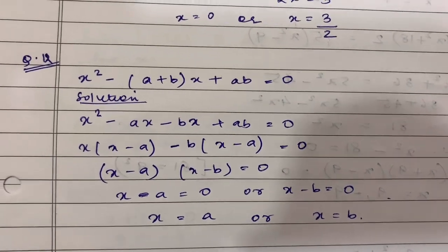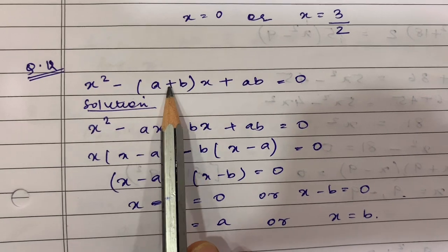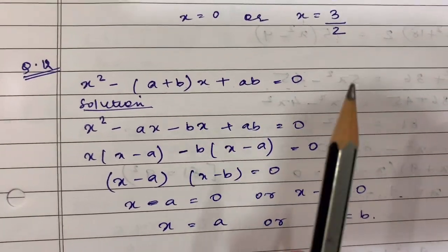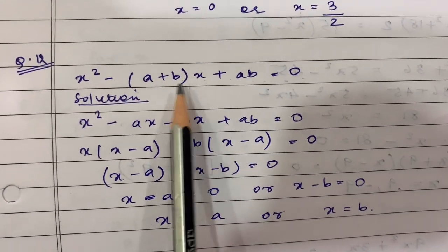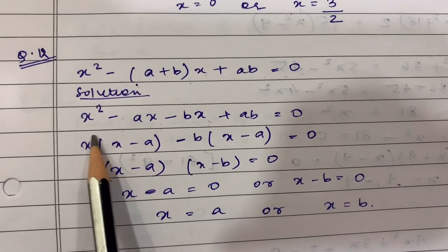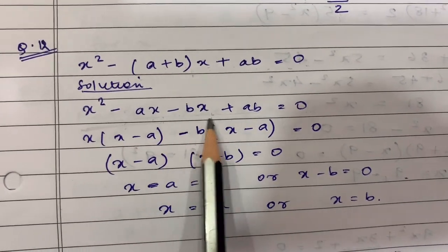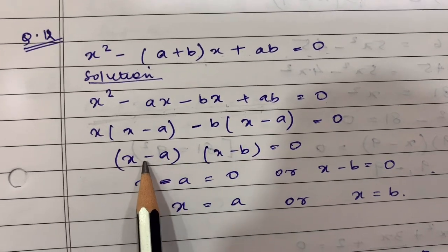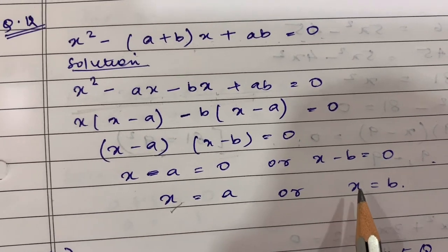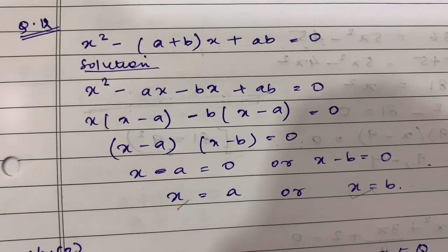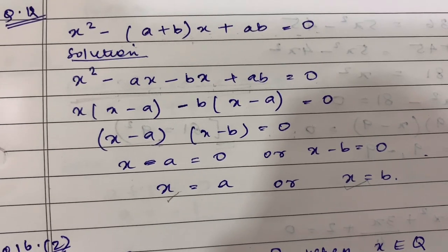The second sum is question number 12 of exercise 5c: x² - (a+b)x + ab = 0. We open the bracket to get -ax and -bx, then group the terms. This gives (x - a)(x - b) = 0, so x = a and x = b. These steps are very easy — we just need to apply the basics.